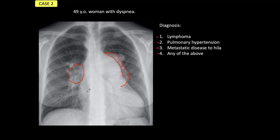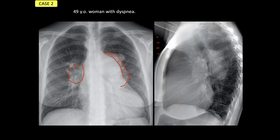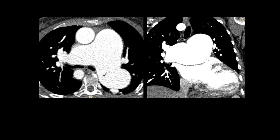So pulmonary arterial hypertension would be the diagnosis here. In the lateral view, we confirm that what we are seeing are not lymph nodes but the right and left pulmonary arteries, one anterior and the other posterior to the axis of the trachea. We confirm the diagnosis with clinical examination, clinical tests, and CT. This shows a markedly enlarged main pulmonary artery compared to the aorta, and enlarged right and left pulmonary arteries. In the coronal reconstruction, we also see the right aortic arch in the upper portion.